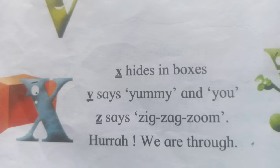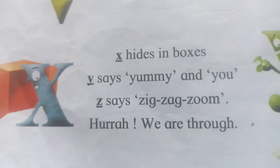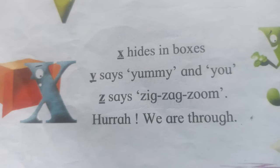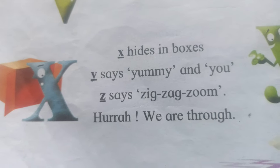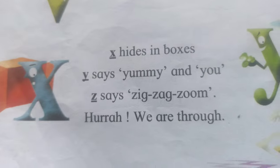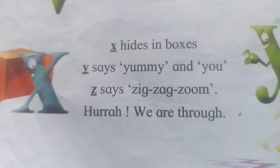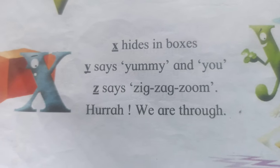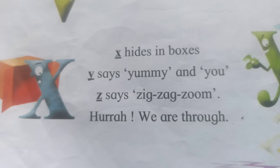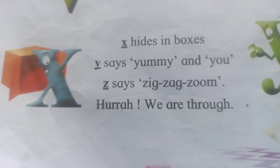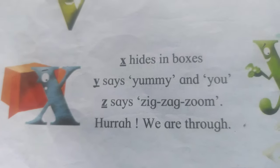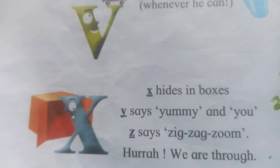X — marks the box, Y — says yummy, and Z — says zigzag zoom. Hurrah, we are through! X — marks the box, Y — says yummy, and Z — says zigzag zoom. Hurrah, we are through!